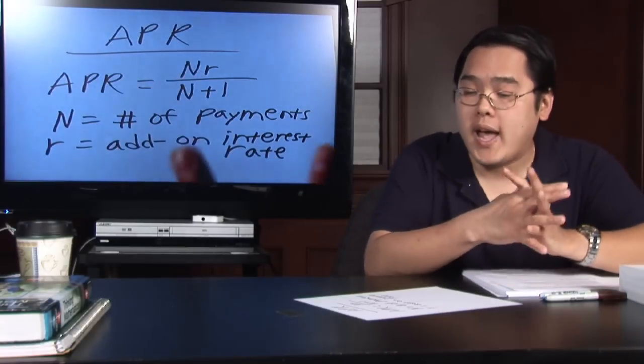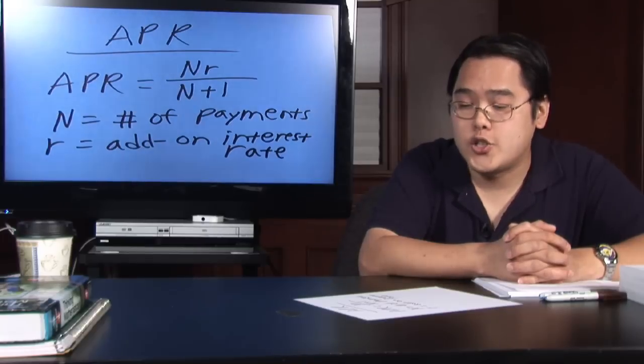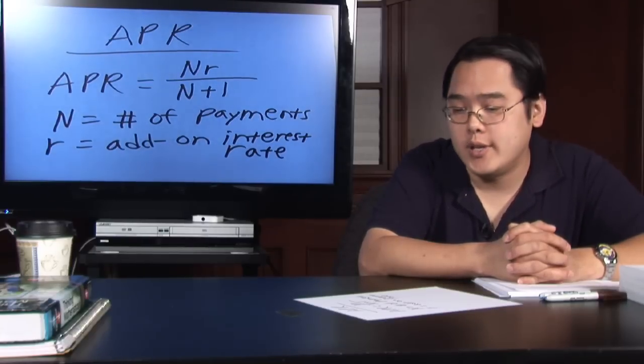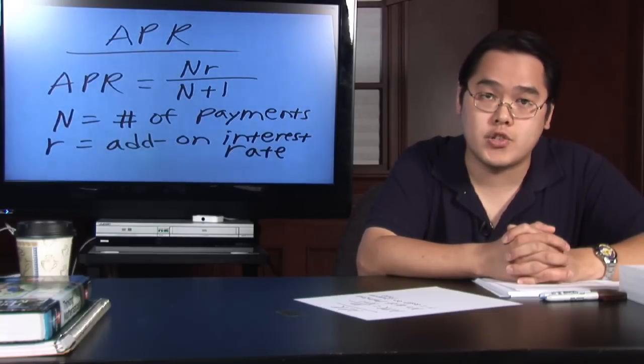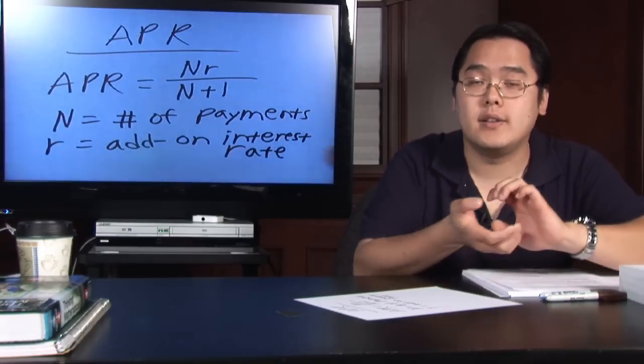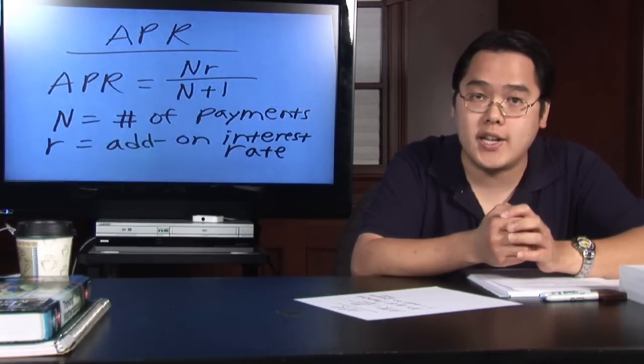Over here, we have the APR formula. As you can tell, there are two letters involved: capital N, which is the number of payments you want to make, and R, which is the add-on interest rate. Again, it's a rate they take as a percentage of how much you're actually financing.